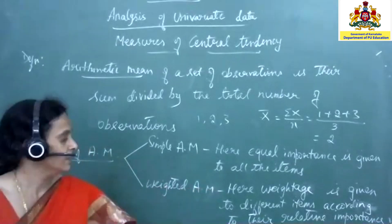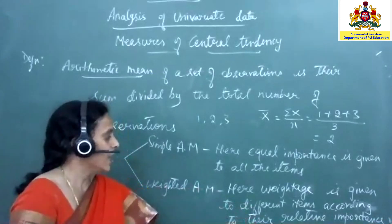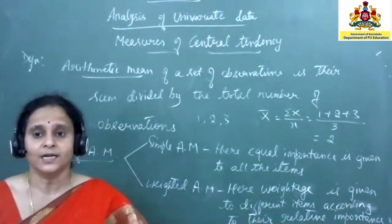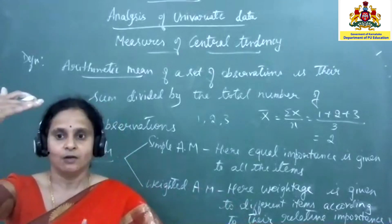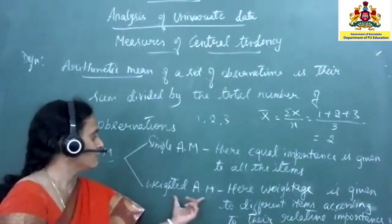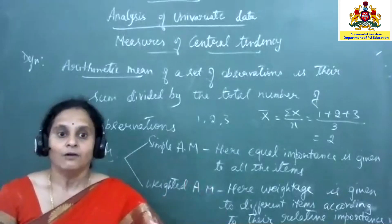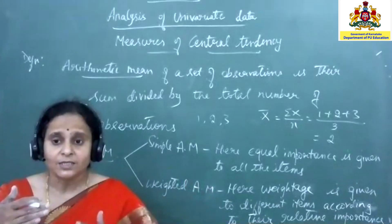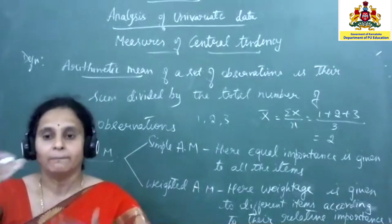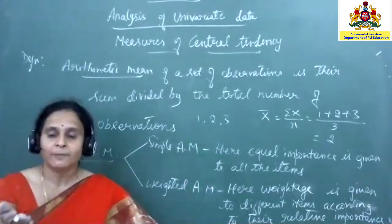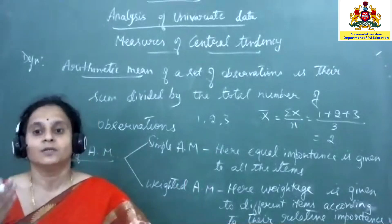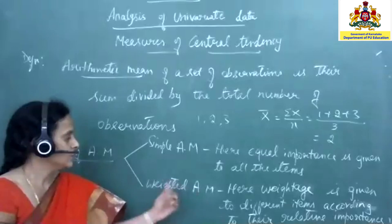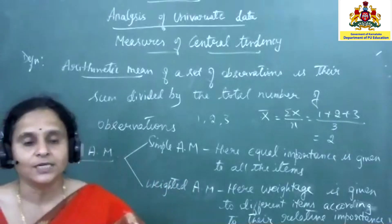In weighted arithmetic mean, the name itself says 'weighted,' meaning importance or weightage is given to different observations according to their relative importance. Not all items are always given the same importance — for some we give priority, for others the least priority. For example, students do not give equal time to all subjects; they give more importance to subjects they find interesting or difficult. That is the weighted arithmetic mean.